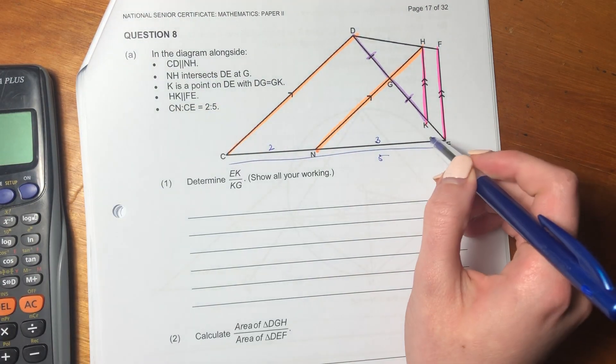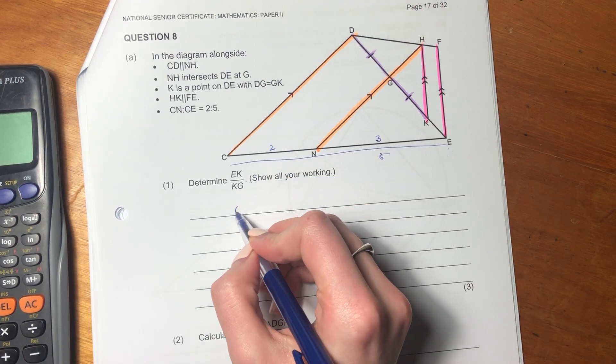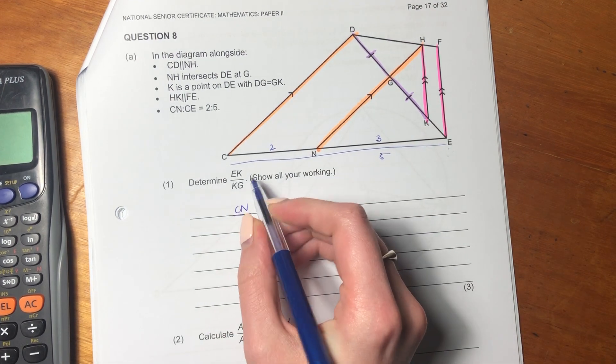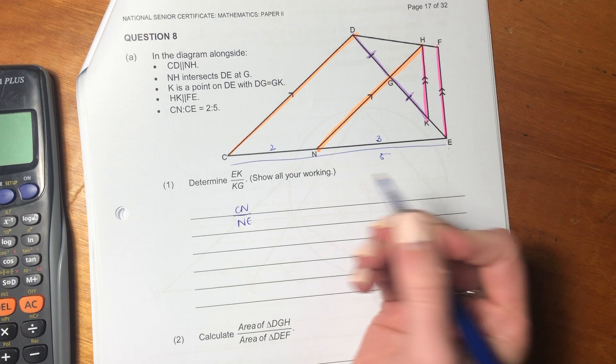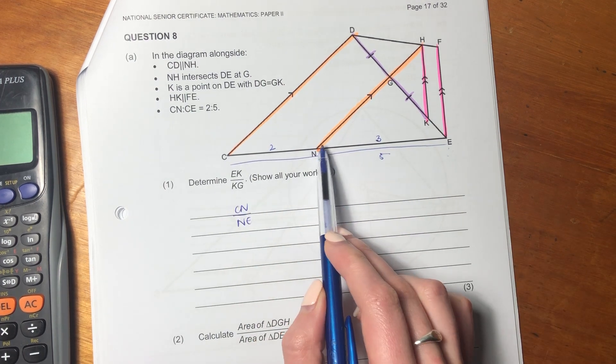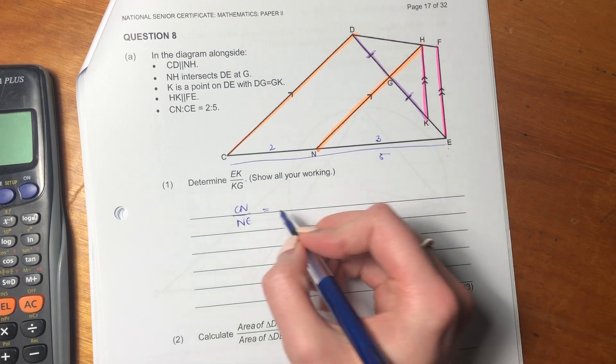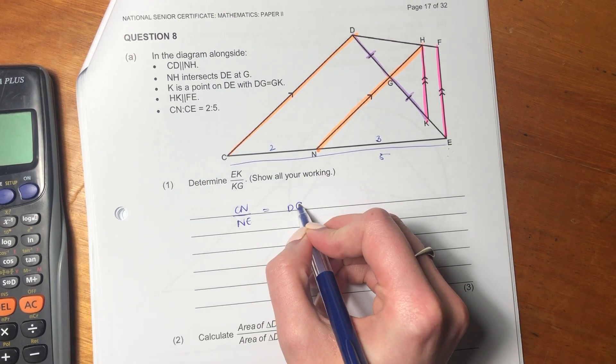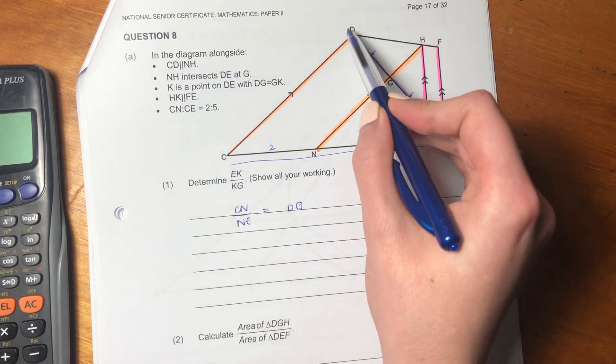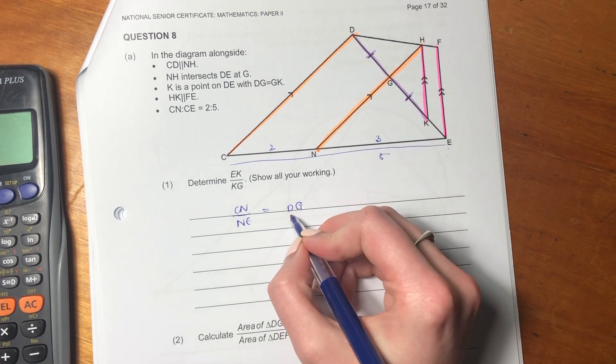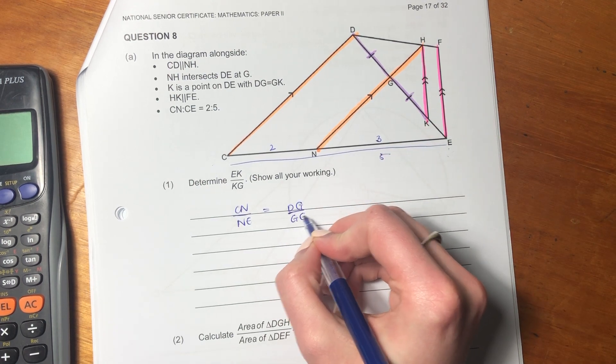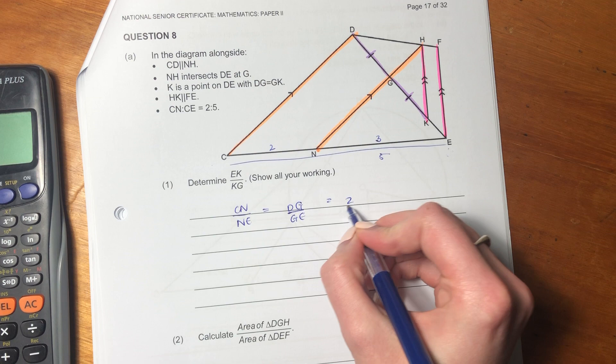But we know that CN over NE equals the same as DG to GE, which is 2 over 3.